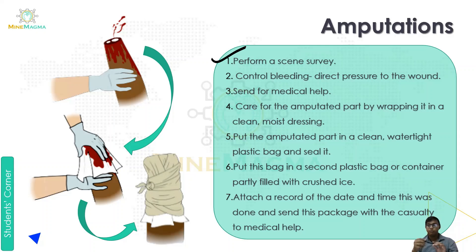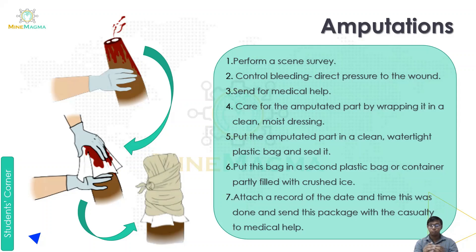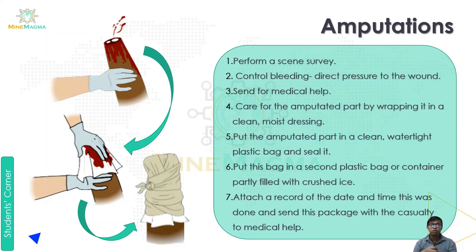First, perform a scene survey — we have to assess the scene to make sure we are not going to come to harm. That is our first step. The second step is to control bleeding by applying direct pressure to the wound. As we covered in external bleeding in the last video, we apply direct pressure on the wound so that the bleeding can be stopped.